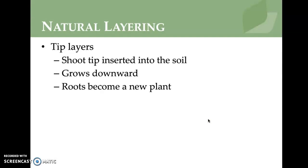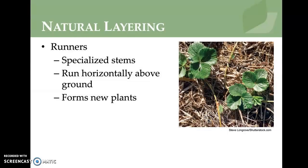Tip layering involves inserting a shoot tip into the soil; it grows downward and roots to become a new plant. Natural layering is illustrated with strawberries — they have runners, which can be a challenge because you sometimes have to cut them to prevent the plant from focusing on producing more runners instead of producing strawberries.